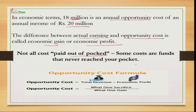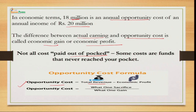The formulas to calculate opportunity cost: total revenue minus economic profit gives you the opportunity cost. Opportunity cost equals what one sacrifices upon what one gains. Opportunity cost is the cost of sacrificing the next best alternative, and this concept is very important because in economics we are concerned with economic profit, which we calculate with the help of opportunity cost.